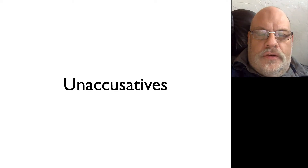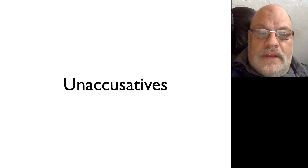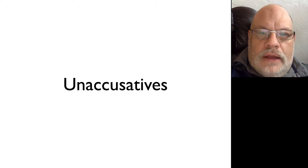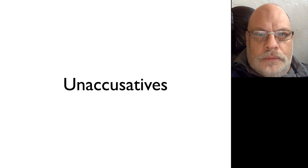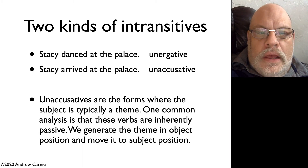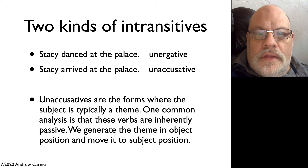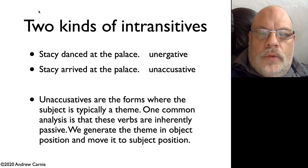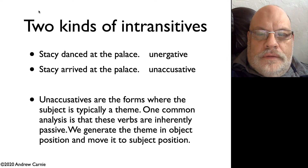There's one more issue I want to talk about before we leave the topic of DP movement, and that has to do with an interesting pattern that you find in types of intransitive verbs and their case properties. The phenomenon we're going to talk about here is called unaccusativity. There appear to be two kinds of intransitive verbs: verbs like dance and verbs like arrive. The dance class we call unergative verbs, and the arrive class we call unaccusative verbs.